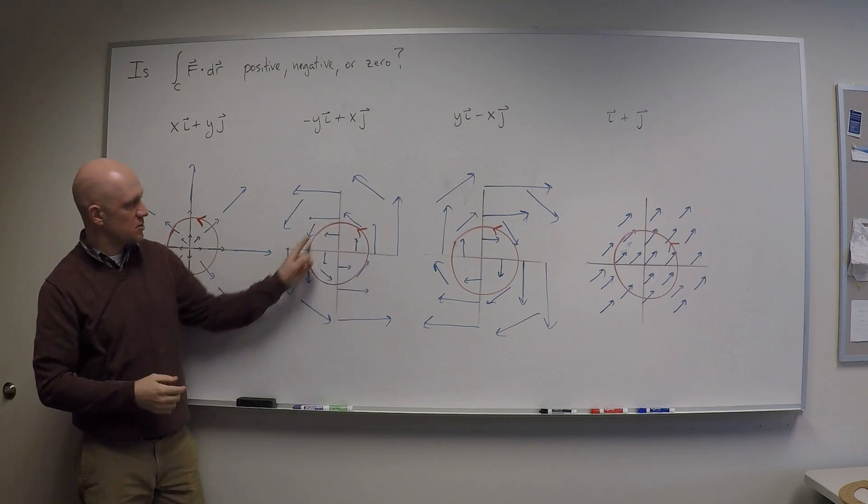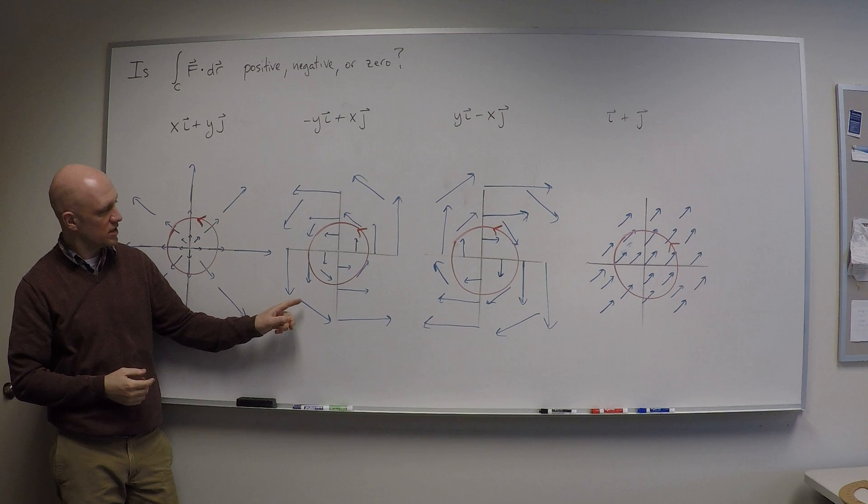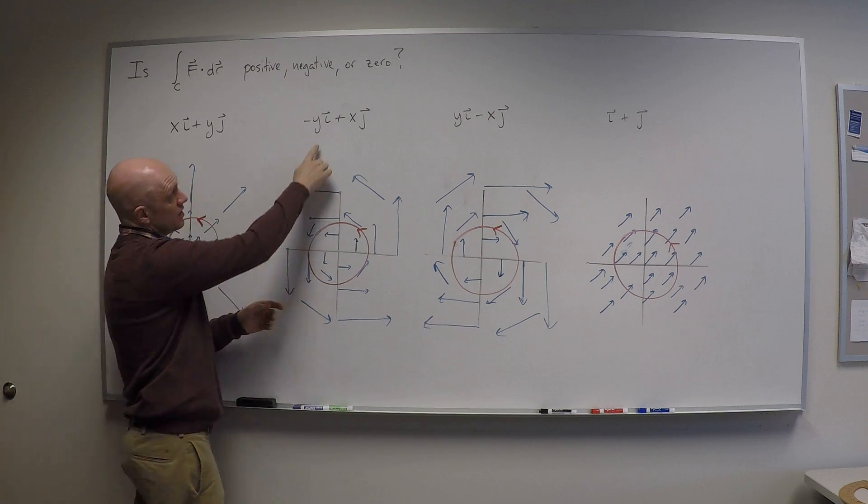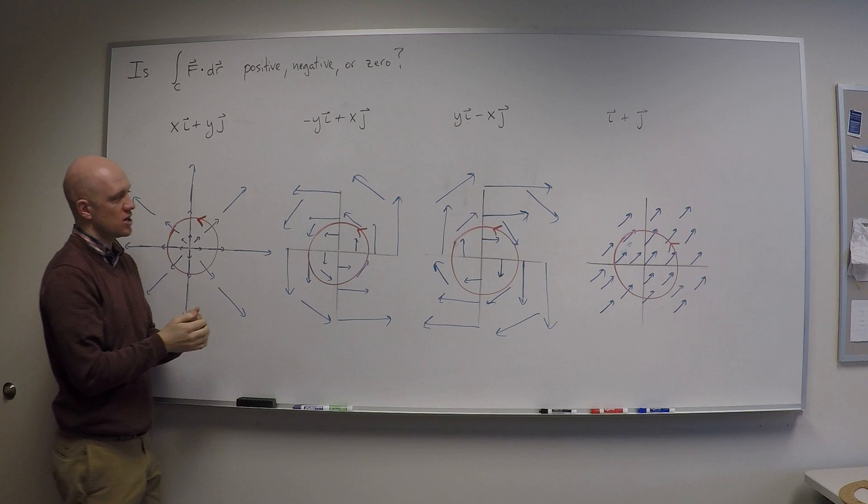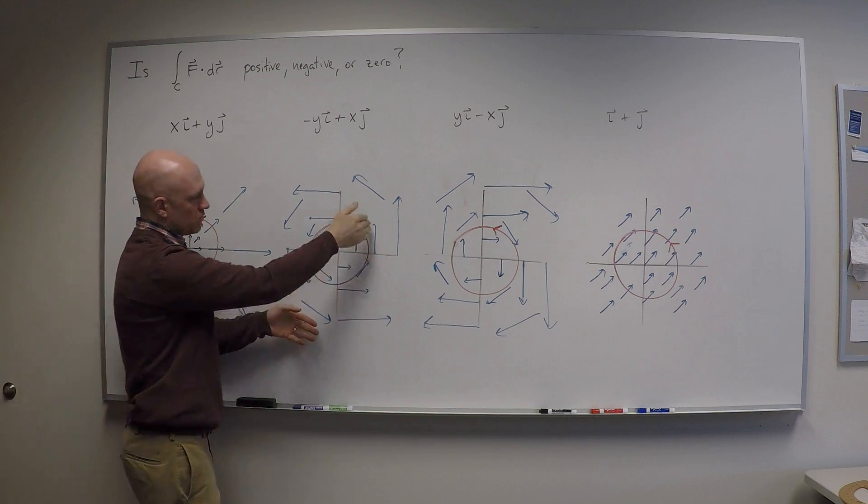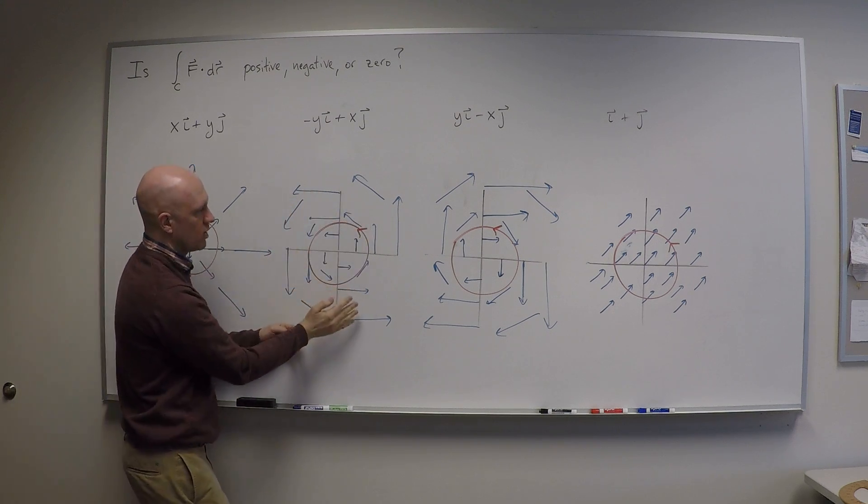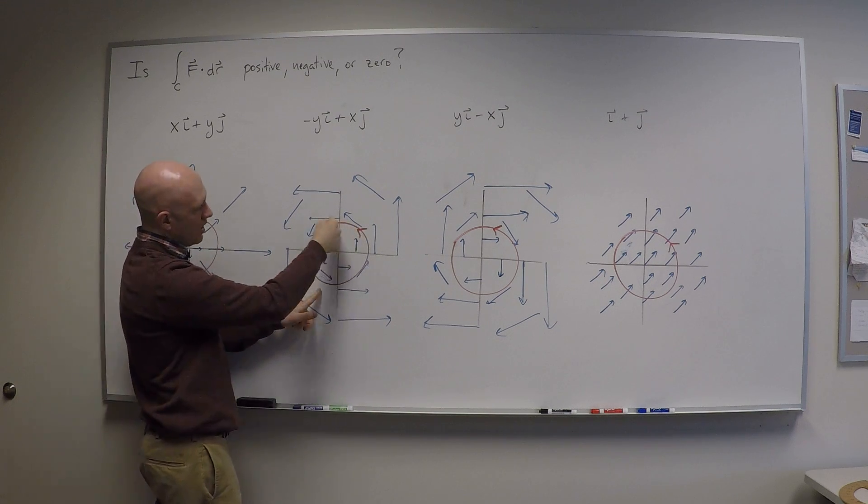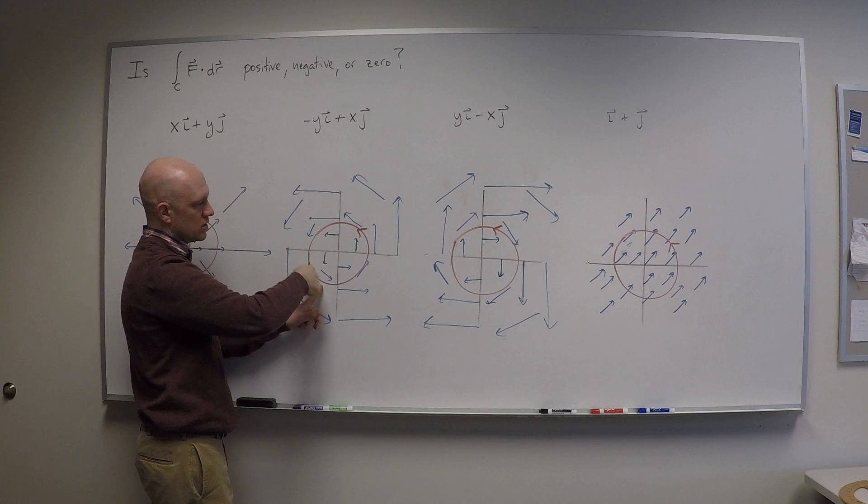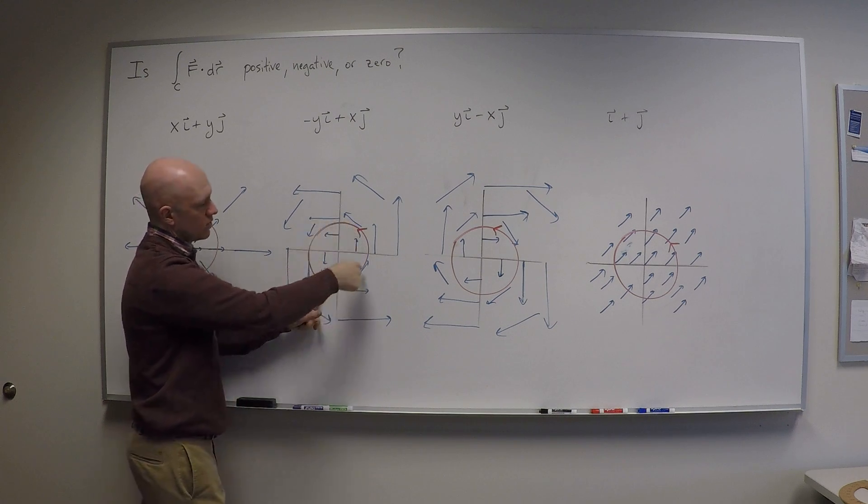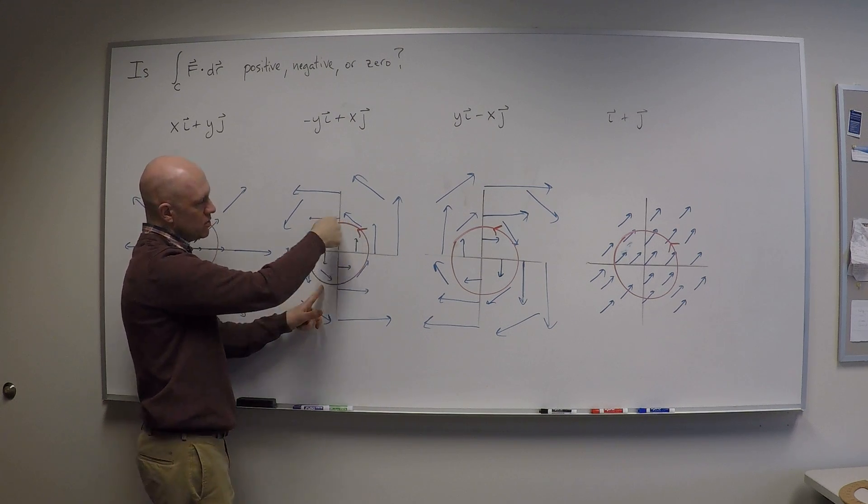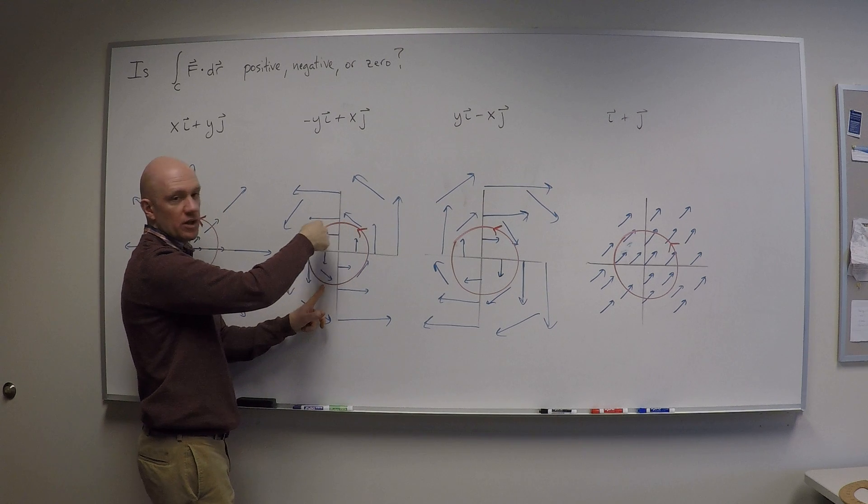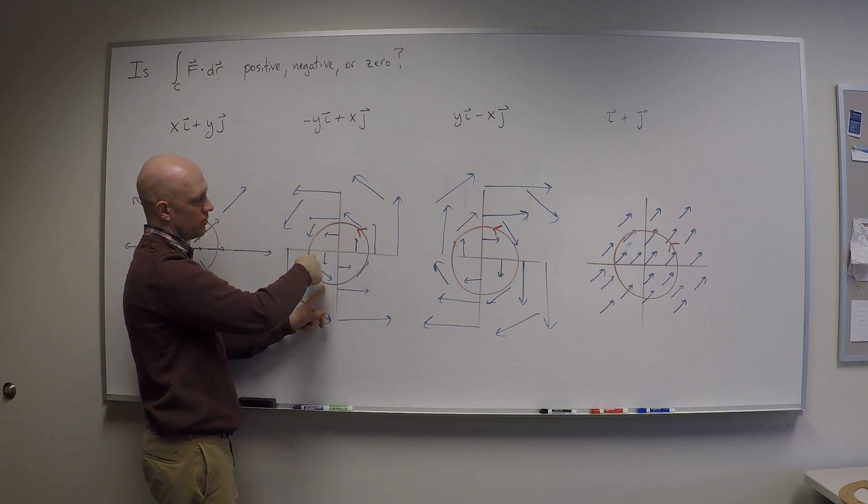Let's look first at this case because this in some sense is the simplest one. I have a vector field minus yi plus xj, and this is a vector field which looks like it's spinning around everywhere in this kind of circulating motion. If I go around a counterclockwise circle centered at the origin and do a line integral around that circle, that line integral computes how much I go with the flow of the vector field.